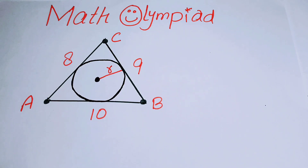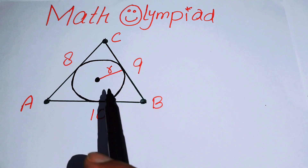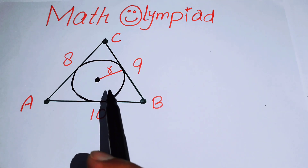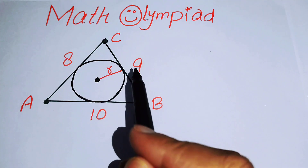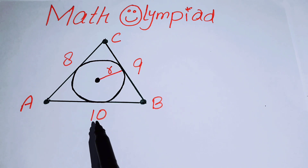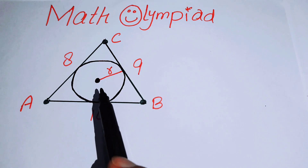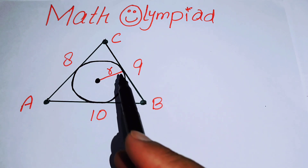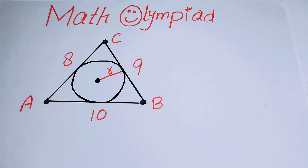Hello everyone, welcome back to the Map of Mathematics. In this video we have a circle inscribed with a triangle with sides 8, 9, and 10, and we can find the radius of the circle.